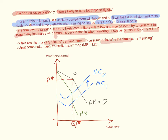Assume that point A is the firm's current pricing and output combination and also the profit-maximizing combination. The firm is currently at point A, producing Q* and charging P* — this is the intersection of marginal revenue and marginal cost. Because the average revenue or demand curve is kinked, above point A demand is very elastic, and below point A demand is very inelastic. This kinked shape results in a marginal revenue curve that is slightly broken.